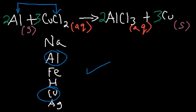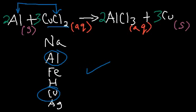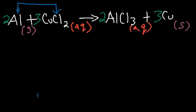In a single replacement reaction you'll have a pure element and a compound. If the metal is above the metal ion on the activity series, the reaction will work. If copper were above aluminum, it would not work. To write the net ionic equation, the first step is to write the total ionic equation — everything in the aqueous phase needs to be separated into ions.